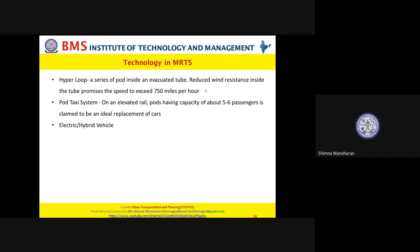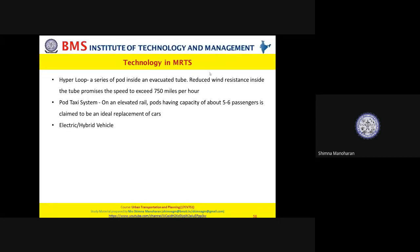Inside the evacuated tube, wind resistance is comparatively less. In a usual monorail or metro rail, speed gets reduced because wind resistance acts in the opposite direction to the vehicle's movement. The hyperloop's evacuated tube promises reduced wind resistance, ensuring speeds of 750 miles per hour. Another emerging technology is the pod taxi system — has anyone seen a pod taxi system?